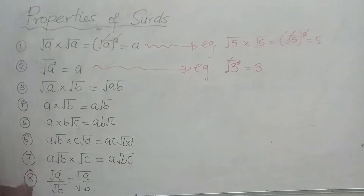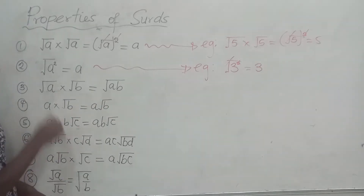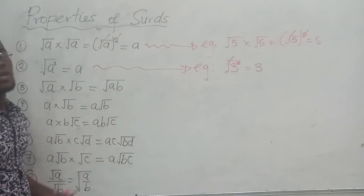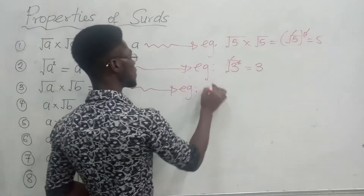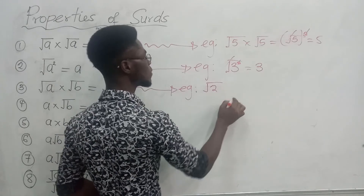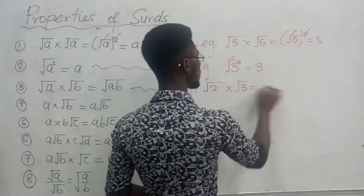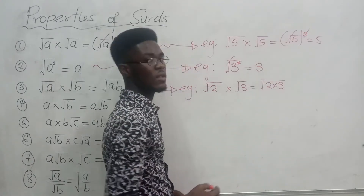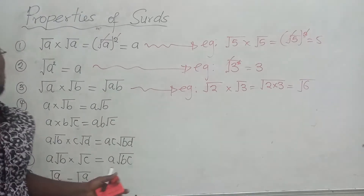The third one says: if you have the square root of a times the square root of b, it is equal to the square root of ab. The numbers under the radical multiply each other under the radical sign. For example, if you have the square root of 2 times the square root of 3, this is equal to the square root of 2 times 3, which equals the square root of 6.